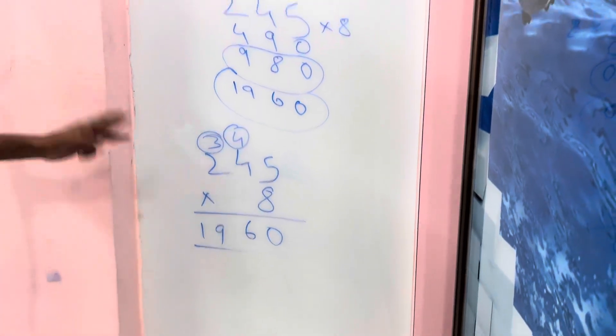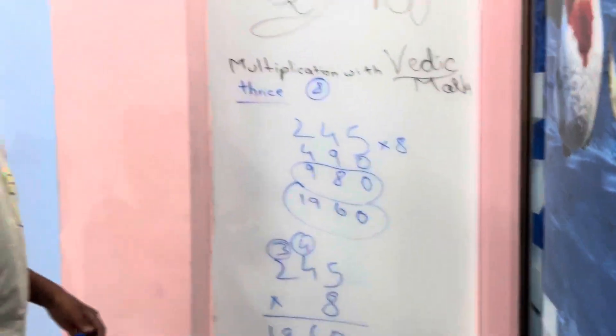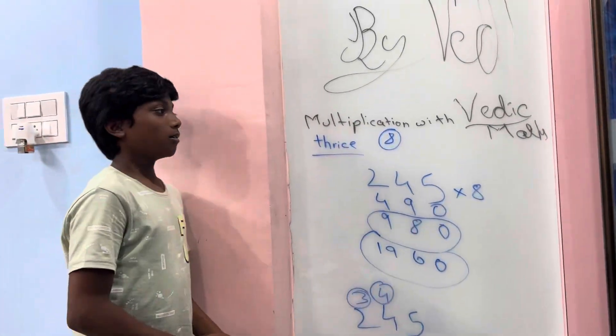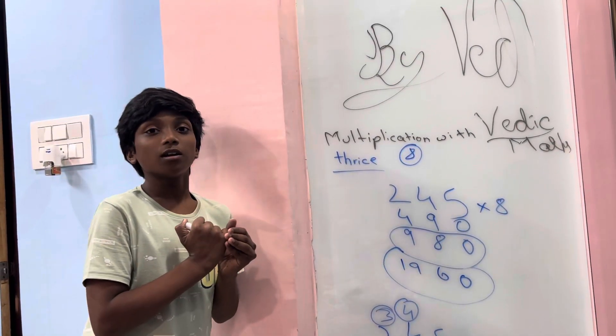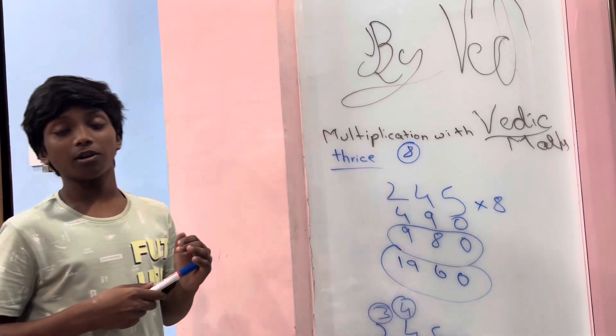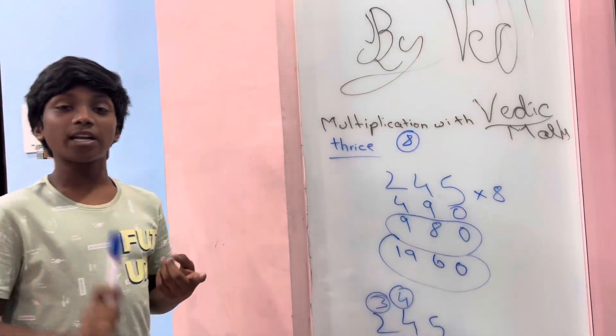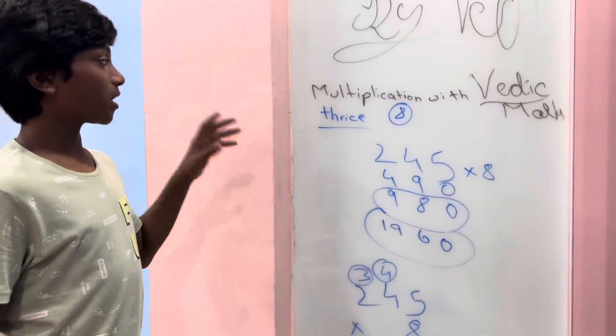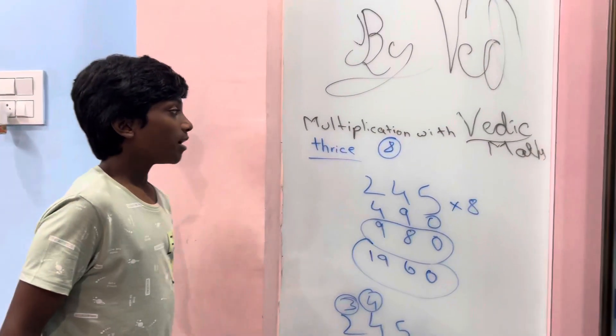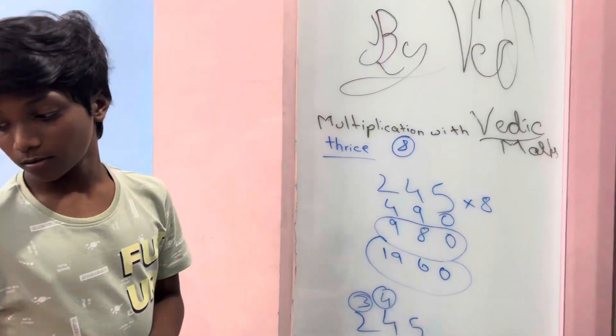1960 is the correct answer. You can use this trick for division with 5, 25, and 50, and for multiplication with 8 and 4.